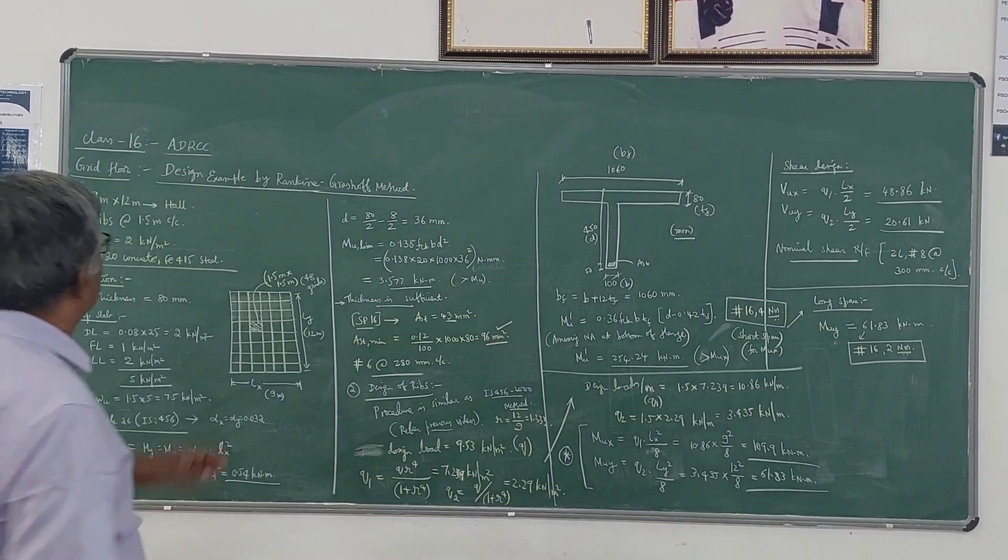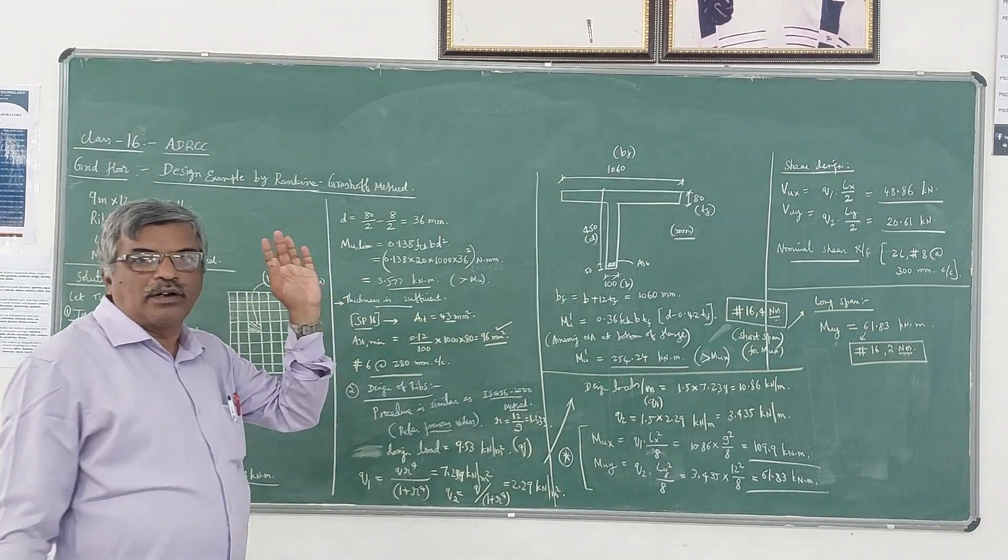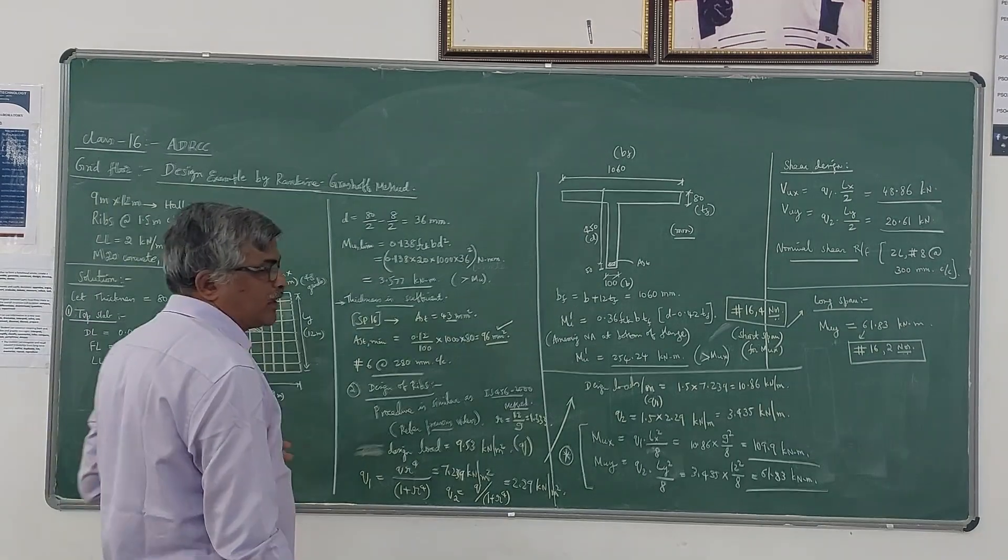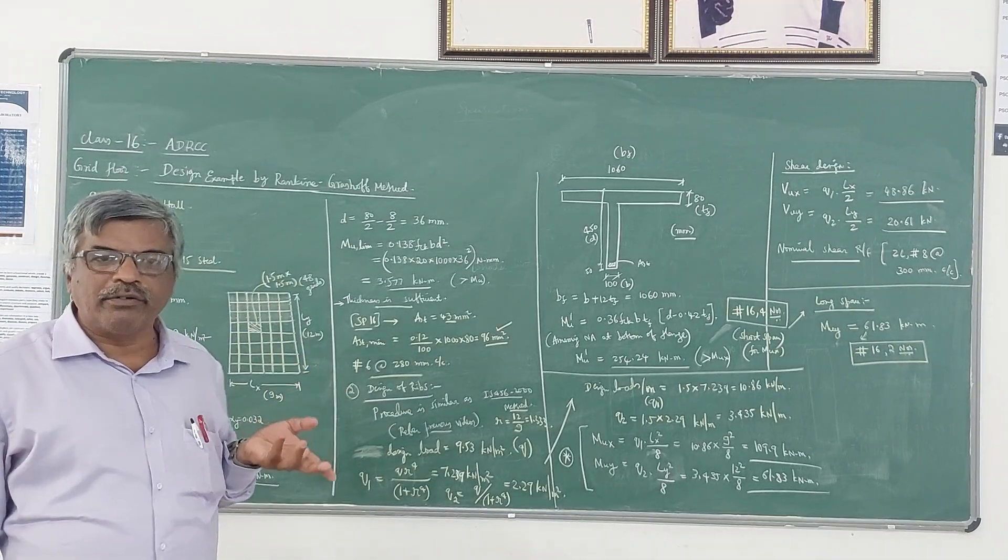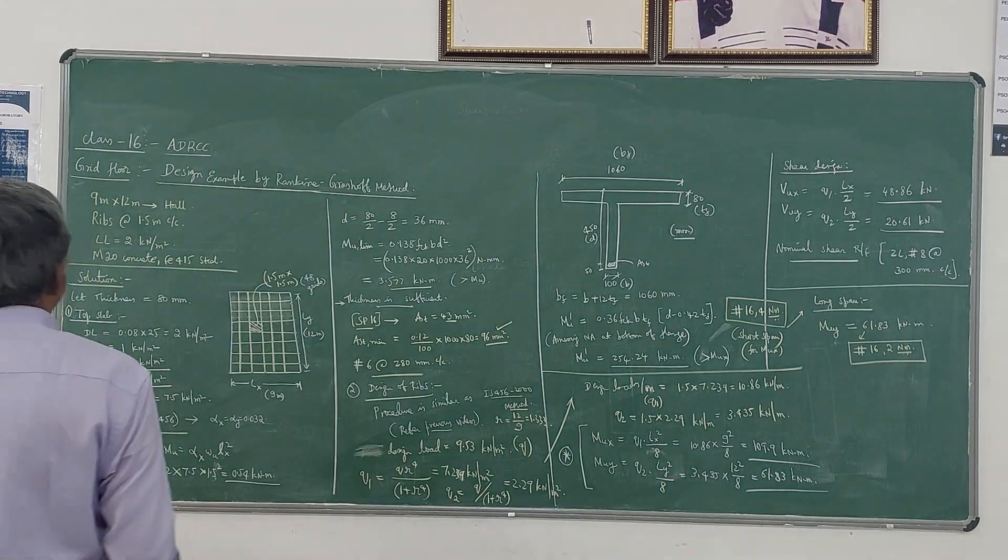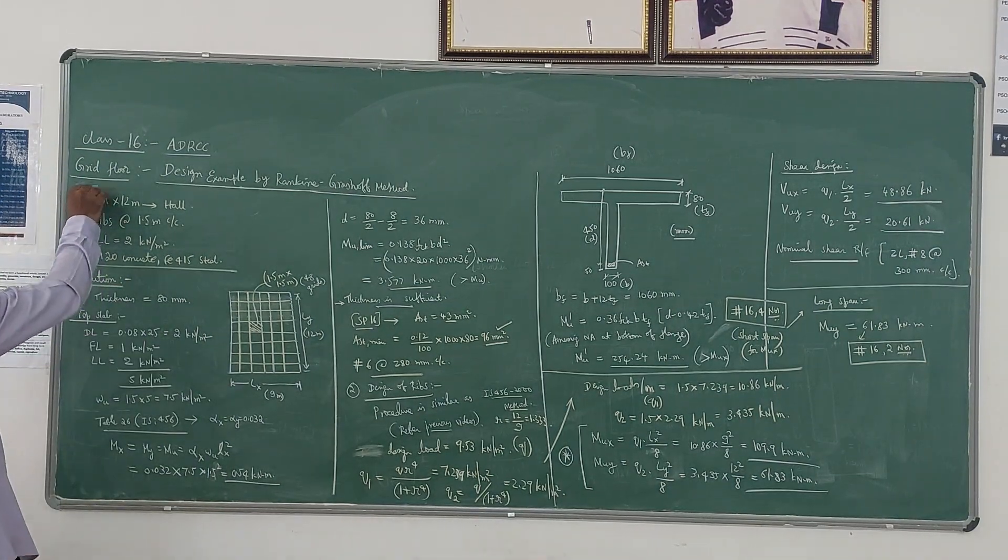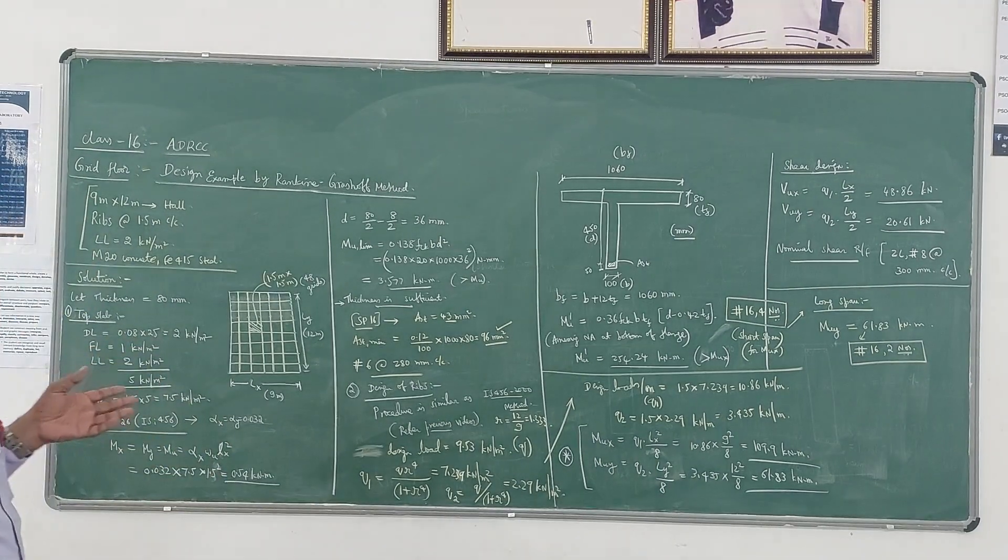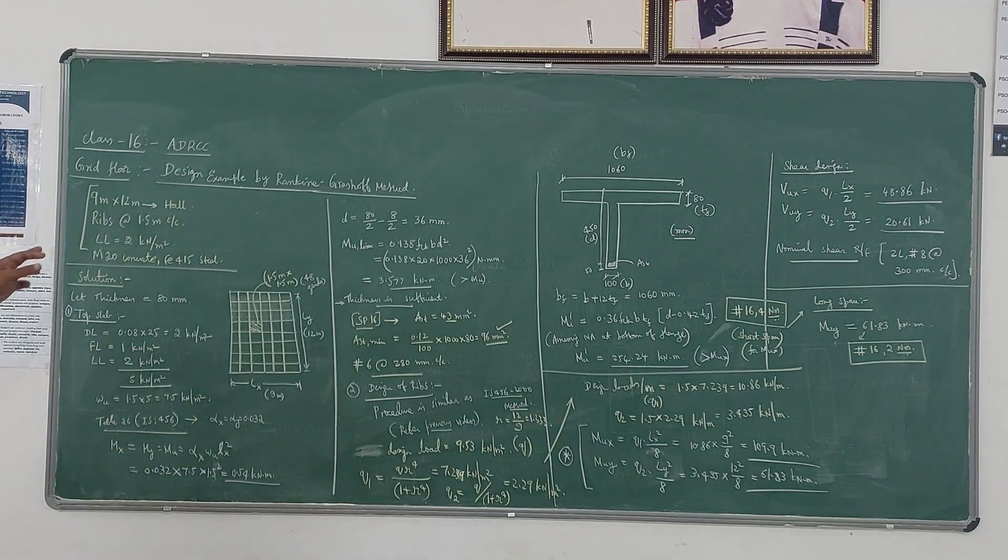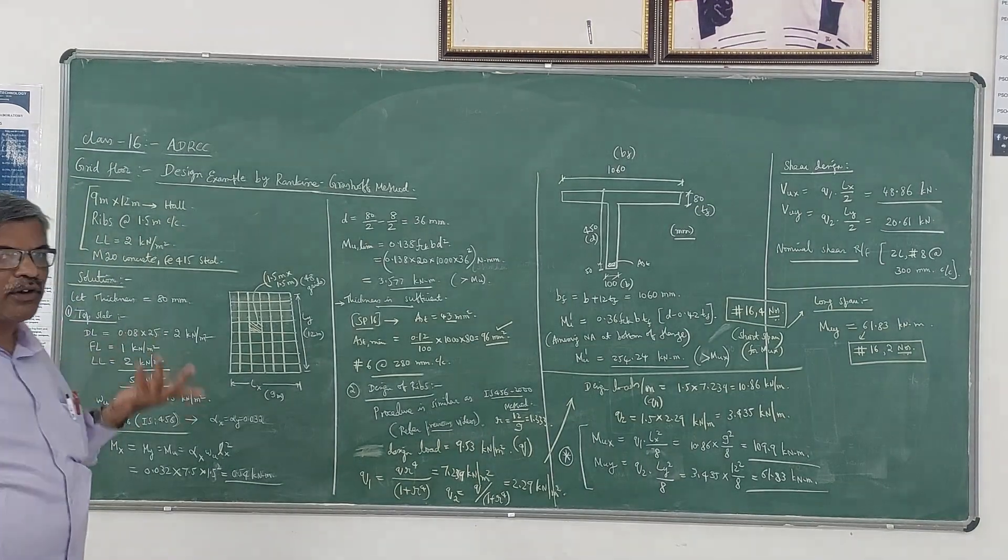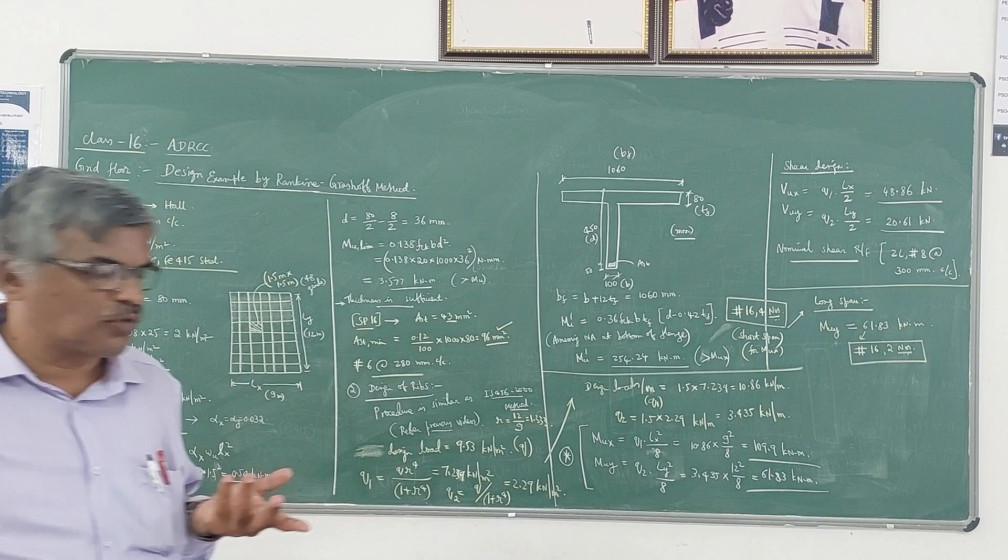In this class, we will discuss the problem on design of the floor by Rankine-Greschoff method. It is almost similar to the IS456-2000 method. Let us take the data like this: we have to design a grid floor for a hall measuring 9 meter by 12 meter. The ribs are placed at 1.2 meter center to center and the live load on this slab is 2 kilonewton per meter square.